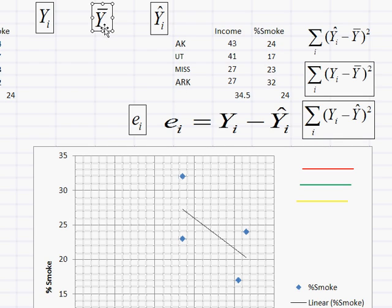Now, the y-bar is just the average rate of smoking, and that is 24. So while the yi's, there are four different numbers, that's why it has the subscript i, y-bar is just one number, the average, 24.